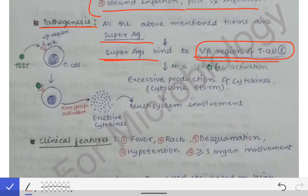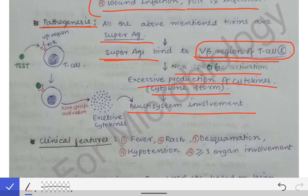After binding to the variable beta region of the T-cell receptor, there is non-specific activation of the T-cells. This leads to excessive production of cytokines, causing a cytokine storm, which in turn causes multi-system organ failure.